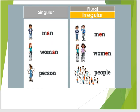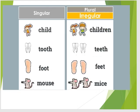And there is another exception. There are some words that change completely in plural. We don't add S or ES. They are: man becomes men, woman becomes women, person becomes people — we can also say persons — child becomes children, tooth becomes teeth, foot becomes feet, and mouse becomes mice.